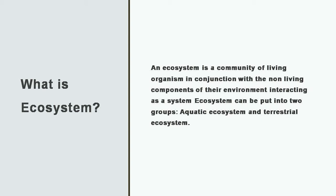Now, what is an ecosystem? An ecosystem is a community of living organisms in conjunction with non-living components. When we talk about ecosystem, it is the relationship between biotic and abiotic — living with non-living things. Ecosystems can be put into two groups: aquatic and terrestrial.